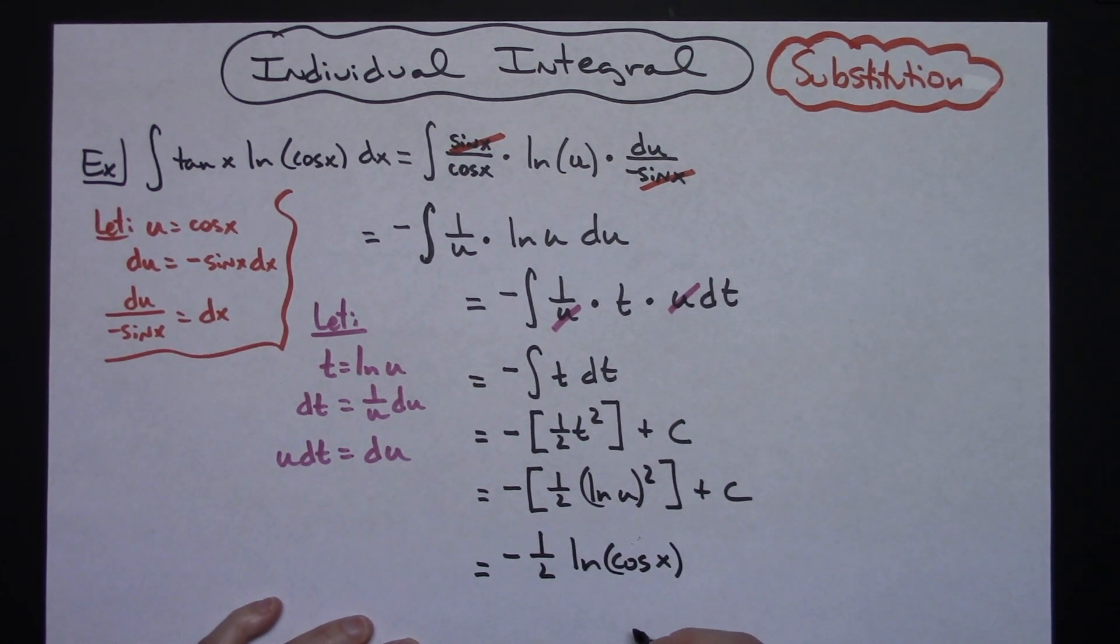Alright, and then that all being squared because natural log of u is squared. This whole thing has to be squared and then plus c.